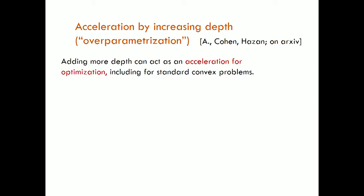I want to make a plug for another recent paper — Nadav may talk about it later — which is an intriguing observation that increasing depth can actually be a good thing. Just to set this in perspective: deep learning has been around for many decades, and the reason it never got going earlier was that training deep nets of depth more than three or four was very difficult. Modern techniques have gotten around it. But in general, the feeling was that when you add more depth, the gradient propagates through all these layers, gets very attenuated, becomes noisy, and you don't make progress. Generally the feeling was that adding more depth complicates your optimization.